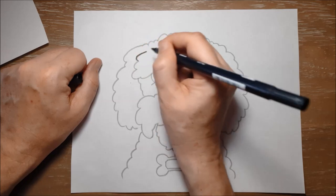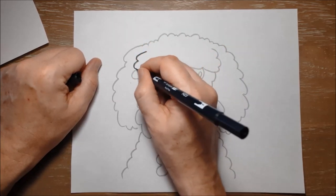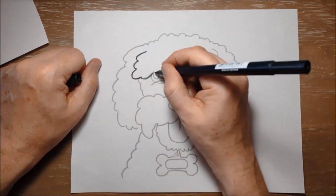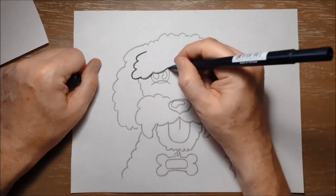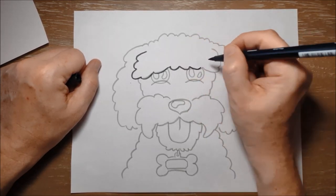And a Bernadoodle is a mix of two other types of dog: a Bernese mountain dog and a poodle. And it's from the poodle that Lola would get all of this kind of fluffy curly hair.